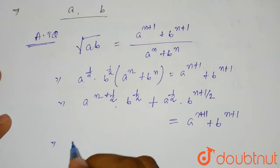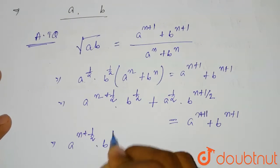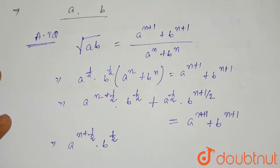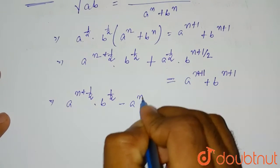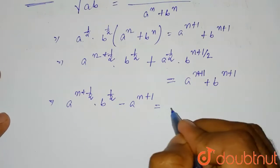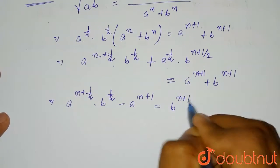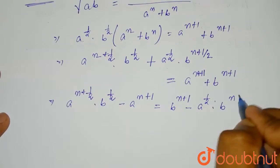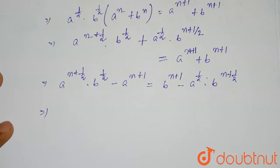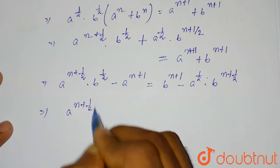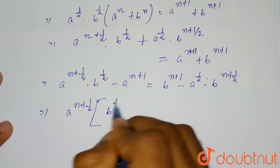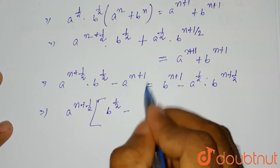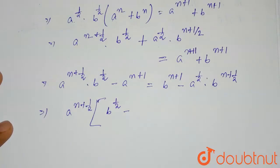Rearranging, we bring a^(n+1) to the left side: a^(n+1/2) × b^(1/2) − a^(n+1) = b^(n+1) − a^(1/2) × b^(n+1/2). Note that n+1 can be written as n + 1/2 + 1/2, since 2 × (1/2) = 1. So we split the exponent into two parts: n + 1/2 and 1/2.